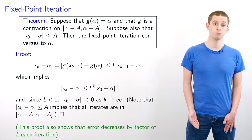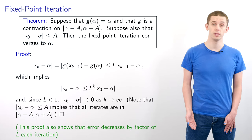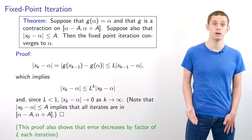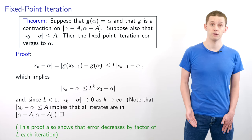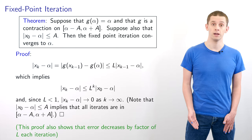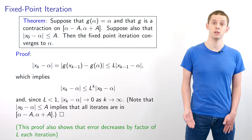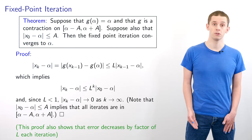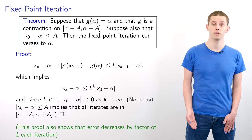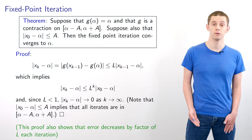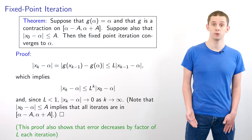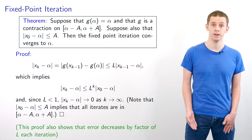Note that to complete this proof we require all x_k to remain within [α − a, α + a], which is indeed true. We can also see from this proof that each iteration reduces the error between x_k and α by a factor of L.